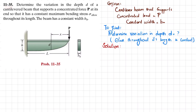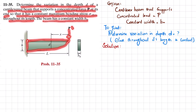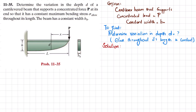Welcome back. Problem 11-35: determine the variation in depth d of a cantilevered beam that supports a concentrated force at its end so that it has a constant maximum bending stress throughout its length. The beam has a constant width b naught. This is the cantilever beam acted upon by concentrated load P at the end. The cross section shows width b naught while height changes at every section. You have to find the depth d variation for constant maximum bending stress throughout the length.